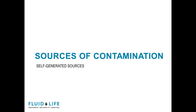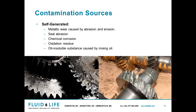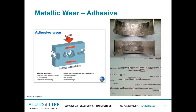So sources of contamination. The self-generated sources are going to be metallic wear, seal abrasion, chemical corrosion, and oxidization residue, as well as oil-insoluble substances caused by mixing oil. A few types of wear I'm going to cover: the first is adhesive wear. Essentially what happens in this case is if there is no lubrication or inadequate lubrication between two mating surfaces, they're going to basically weld together and pull apart.